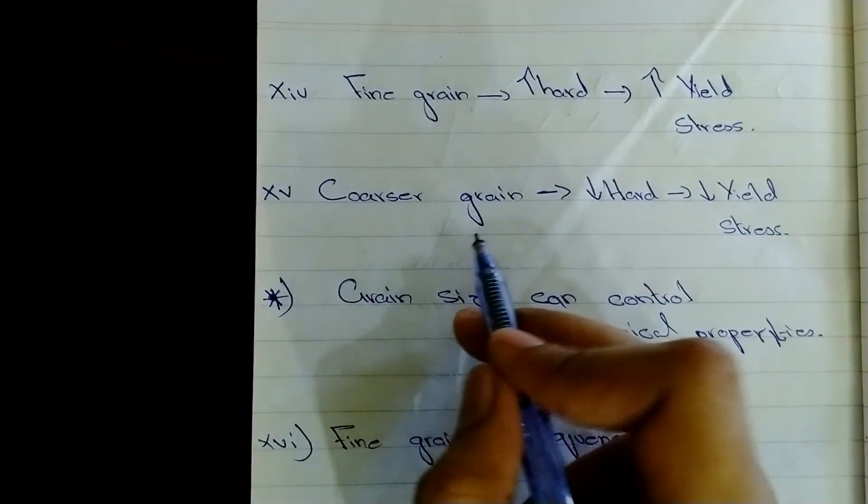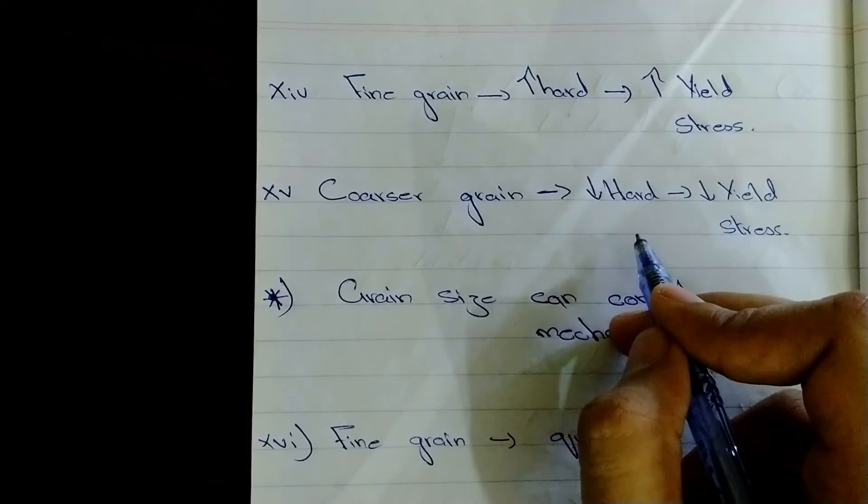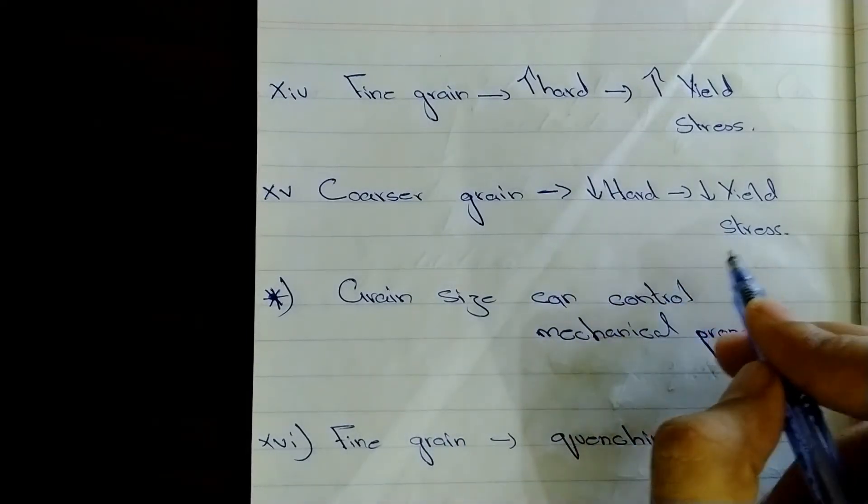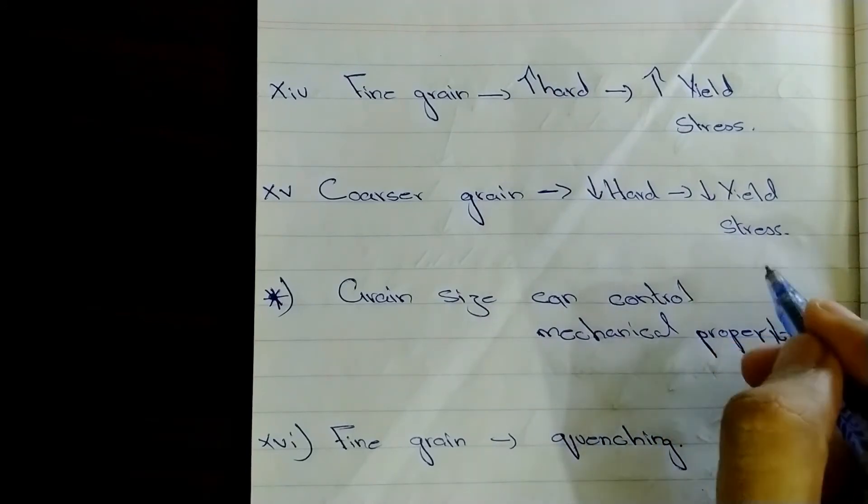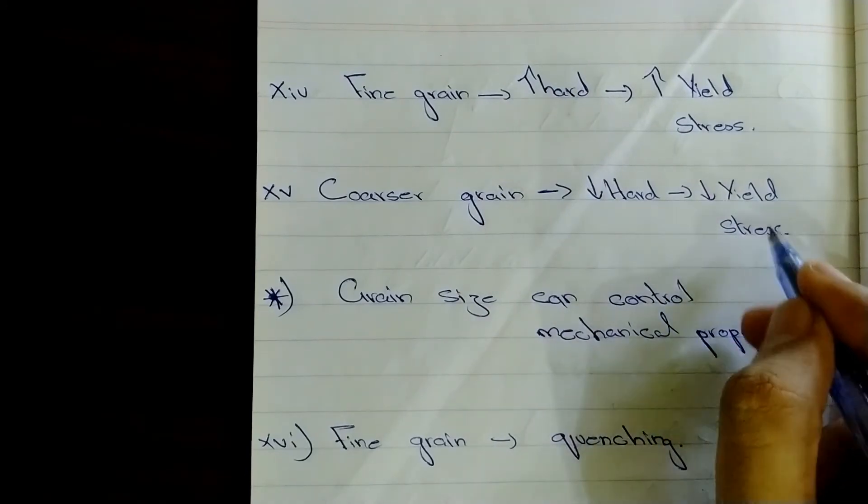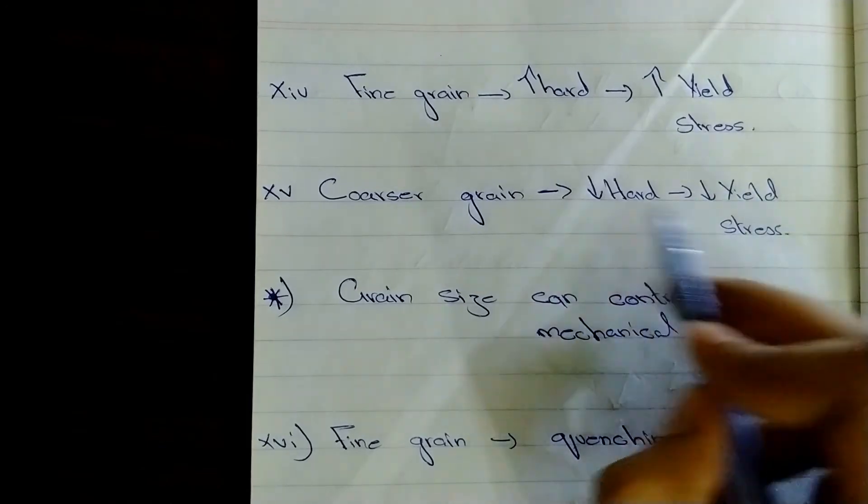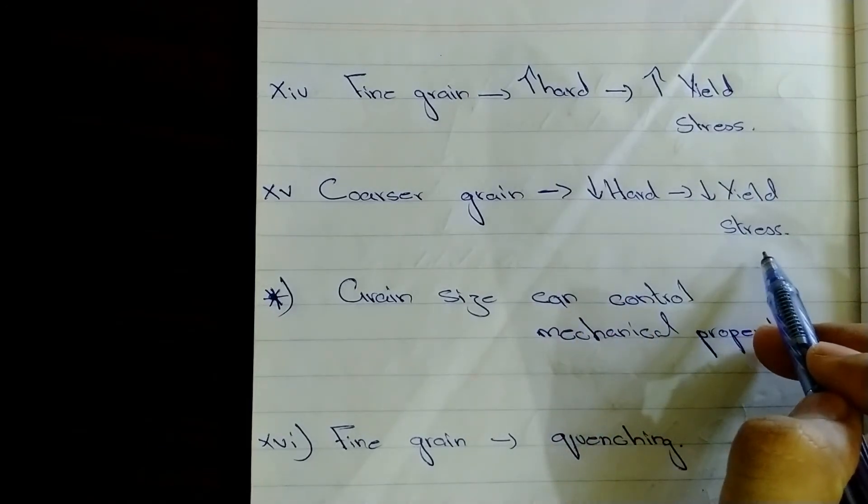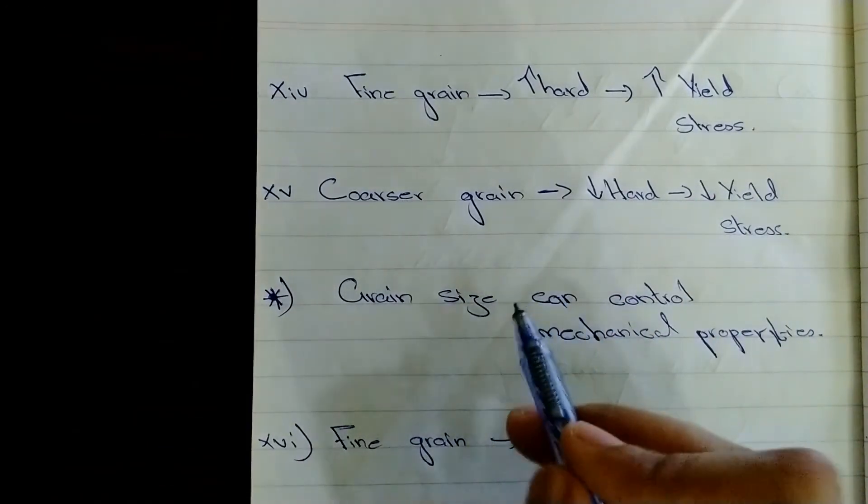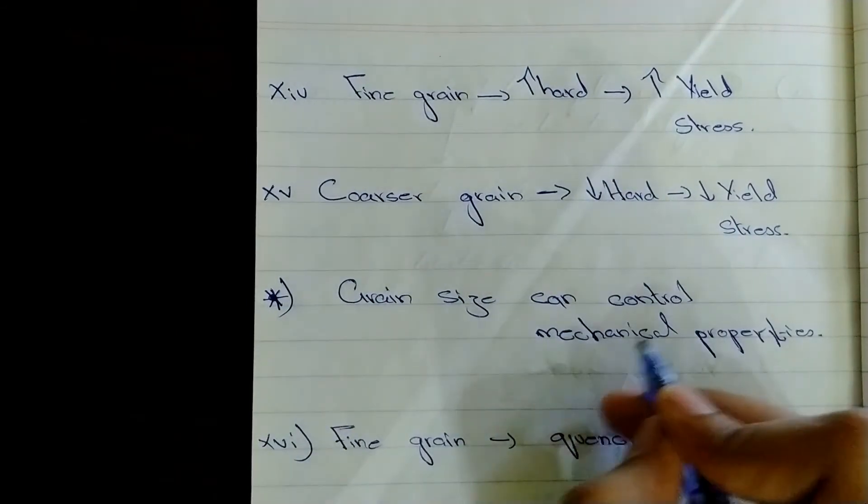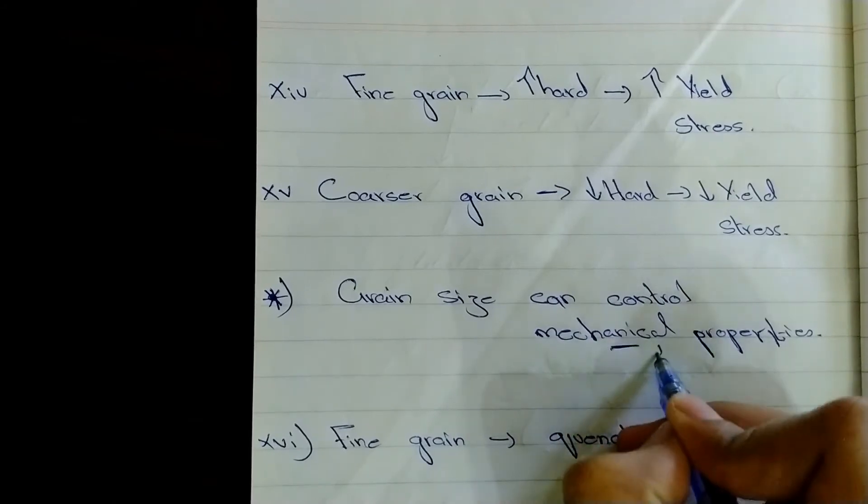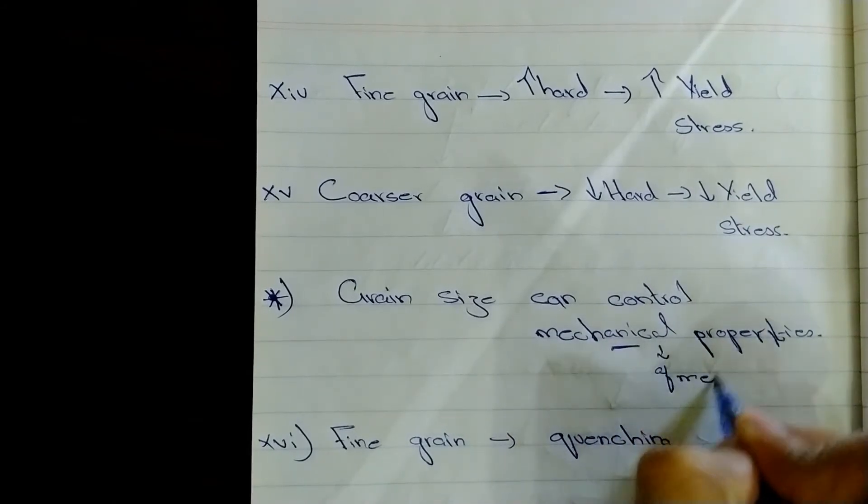Fine grain structure is more harder and they require more yield stress to produce permanent deformations. In comparison with coarser grain, which produces less hard material, and it requires less yield stress to produce permanent deformation comparatively with the fine grain structure.